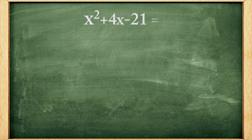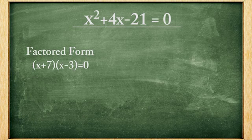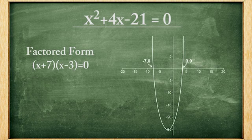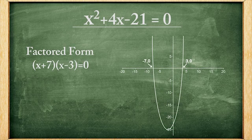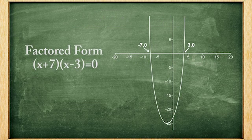For example, consider the quadratic polynomial equation x² + 4x - 21 = 0. The left side of the screen displays a factored expression, and the right side shows a graphical display. Understanding the structural similarities between these different representations of the same problem can improve understanding of mathematical features and relationships.